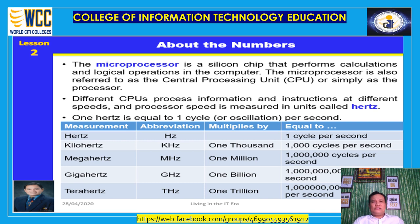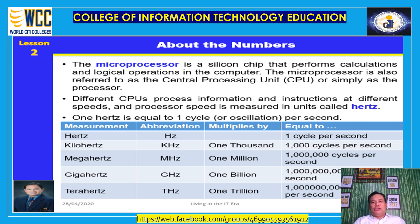Most desktop systems available today include processors with speeds between 3 and 4 gigahertz. Most laptops include processors in the 2 to 3 gigahertz range. When you purchase a computer, you will find the processor speed listed in the product description.